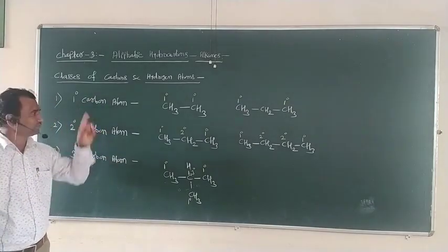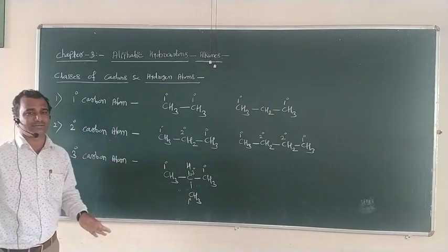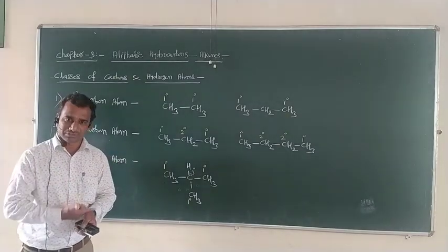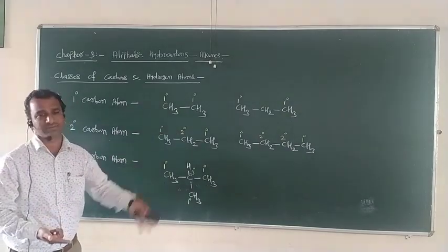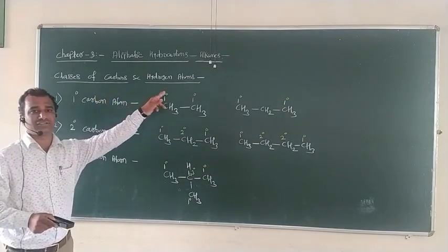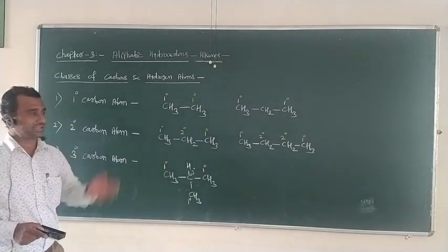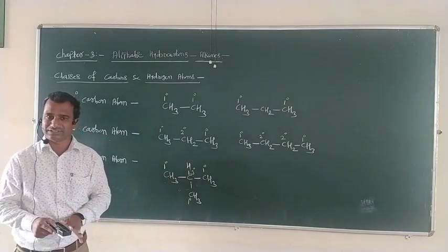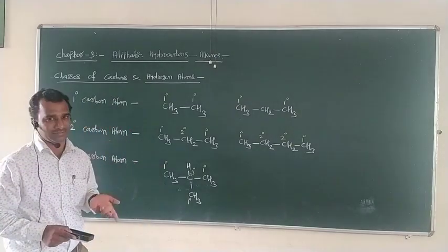So carbons can be classified into three types: primary carbon atom, secondary carbon atom, and tertiary carbon atom. This classification simply depends on how many carbon atoms are attached to a given carbon. Similarly, we now study the classes of hydrogen atoms, which is also an important basic point in alkanes. Hydrogen atoms can also be classified into three classes, similar to the carbons.